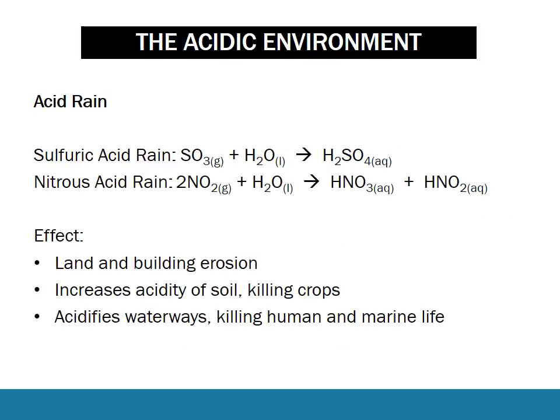Acid rain is when these sulfuric oxides and nitrous oxides mix with water and form sulfuric acid, nitrous acid, or nitric acid. The effects of acid rain are generally bad — they can erode buildings and land, increase the acidity of soil which kills crops, and acidify waterways from which humans drink and marine life live. So acid rain is all around a bad thing.